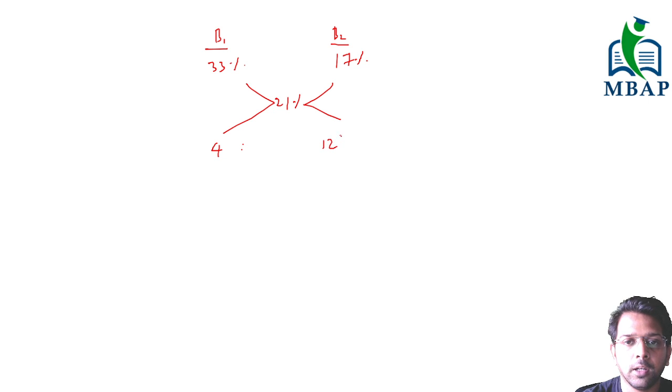They should have been mixed in the ratio 4 is to 12, which means 1 part to 3 parts. 1 part of the first bottle which has a concentration of 33% should be mixed with 3 parts of bottle 2 which has 17% concentration to come to an average of 21%.